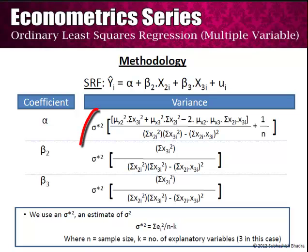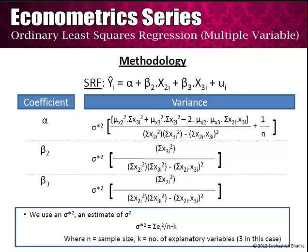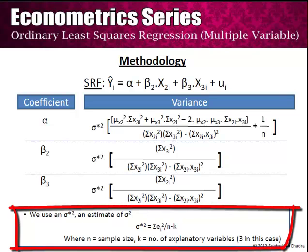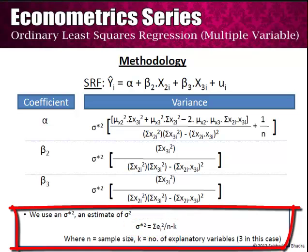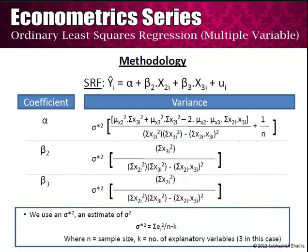Also note that in all of these it is multiplied by σ*². Sigma-square itself represents the variance of the error term in the population regression function, that is summation of uᵢ². Since we do not know the population regression function, we use an estimate σ*², which equals summation of eᵢ² divided by n minus k, where n is the sample size and k is the number of explanatory variables, in our case equal to 3. Summation eᵢ² is the error term in the sample regression function, hence it is the unexplained part of the sample.